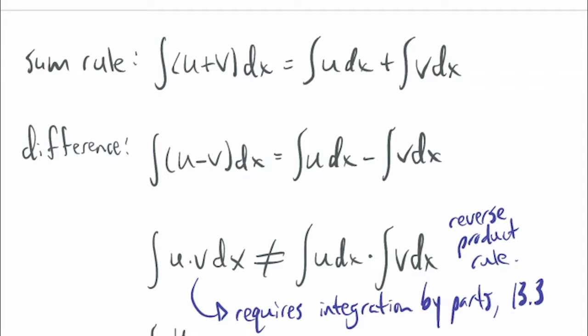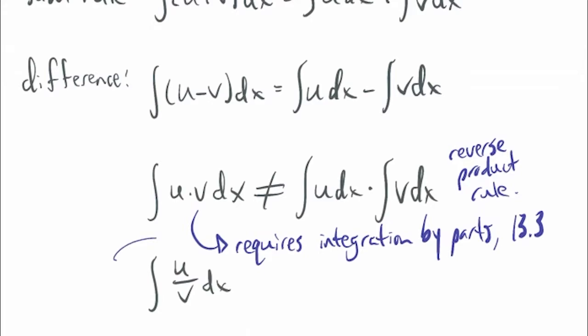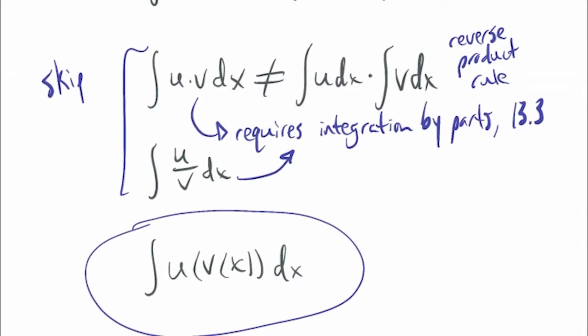If you're going into finance or economics, you should on your own read that section just to see what it is — there's a formula in there. But we're not spending time on it as a required part of the class. The quotient rule reversal also requires integration by parts, so we're skipping both. If you need them for a later course, you can probably pick it up then.